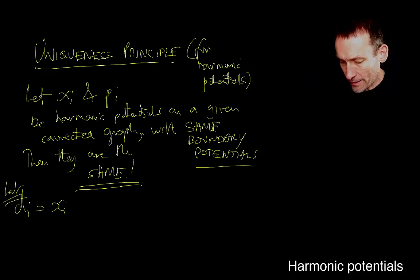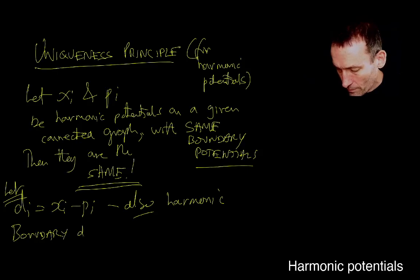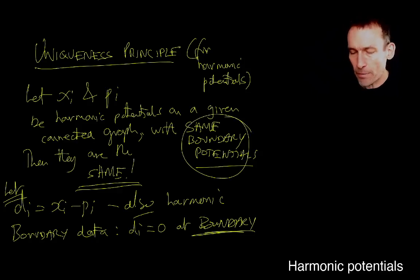How do you prove this? It's very easy. Let Di be Xi minus Pi. Where Xi and Pi are both harmonic potentials. Now, harmonic potential is the definition that it's a potential that's equal to the average of its neighbours. You can see that just by the linearity of that condition of harmonicity, if I take two harmonic potentials and add them up, or in this case subtract them, I'm still going to end up with a harmonic potential. So this is also harmonic. Di is a new harmonic potential. But the boundary nodes have Di equal to zero, because Xi and Pi, whatever the boundary data is, they have the same boundary data by assumption, so therefore Di will have zero boundary data at the boundary nodes.